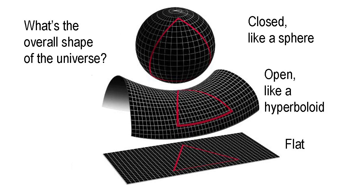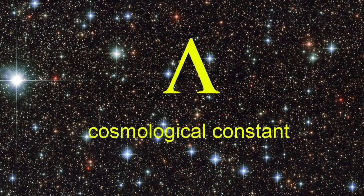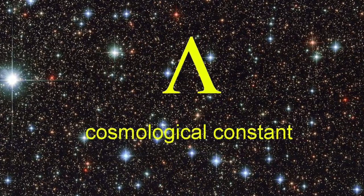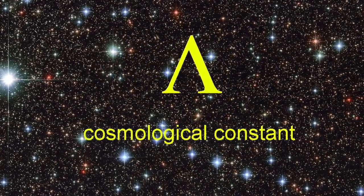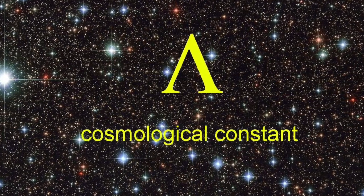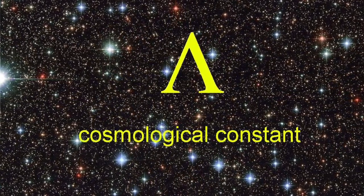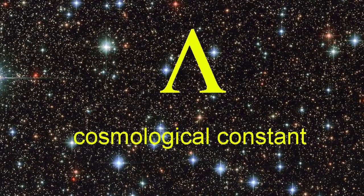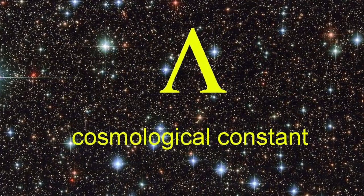At the time the equations were first published, the prevailing view was that the universe was fixed in size. Astronomers had yet to discover that there were other galaxies beyond our own, let alone that most of these galaxies were flying away from us. To bring his theory into line with mainstream astronomical opinion, Einstein in 1917 introduced a quantity represented by lambda, which became known as the cosmological constant. Inserted into his field equations, it exactly balanced out any tendency for the universe to change in size. He later described it as 'the biggest blunder of my life,' because by introducing a fudge factor, he missed predicting one of the great breakthroughs of the 20th century.